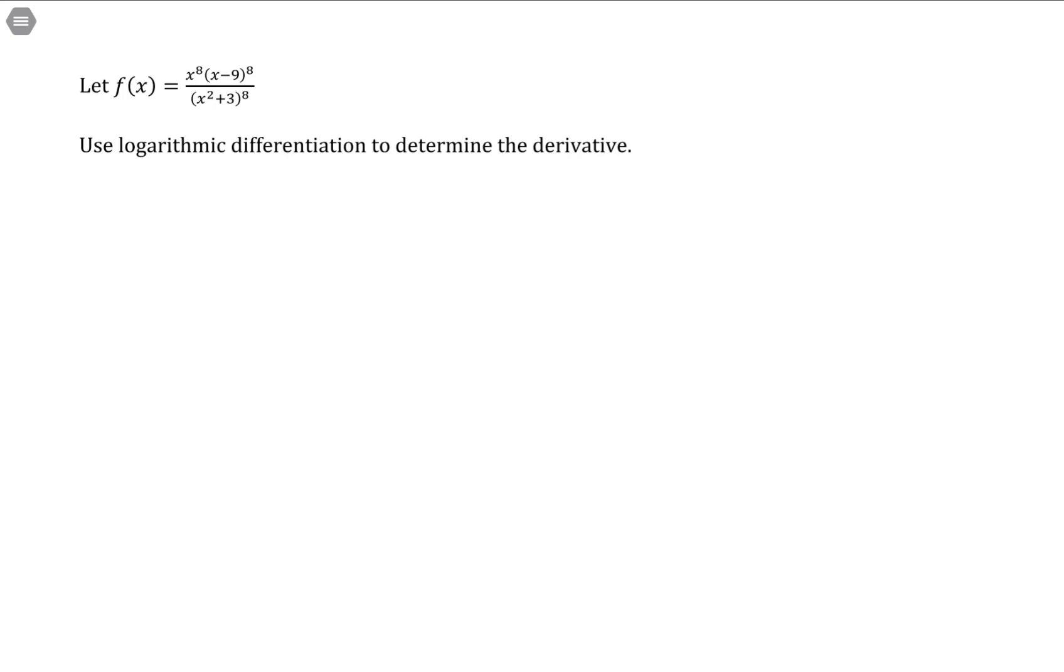Let f of x equal x to the 8th times the quantity x minus 9 to the 8th divided by the quantity x squared plus 3 to the 8th.